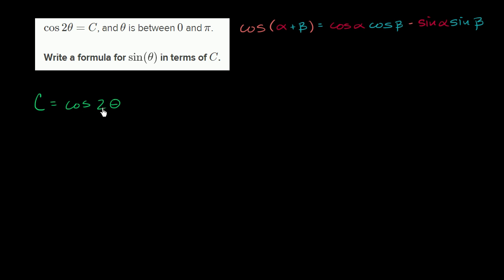So let's try to do that. I can rewrite cosine of two theta as cosine of theta plus theta, which is of course the same thing as two theta. Now I can use the angle addition formula for cosine. This is going to be equal to cosine of theta times cosine of theta minus sine of theta times sine of theta.